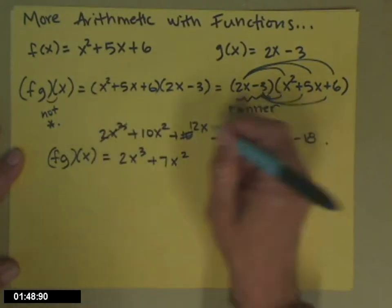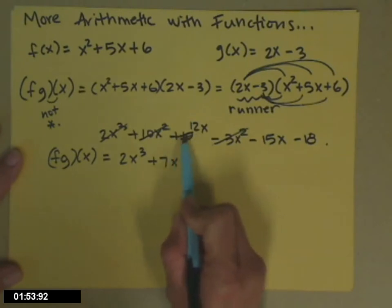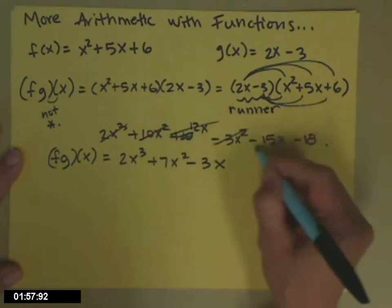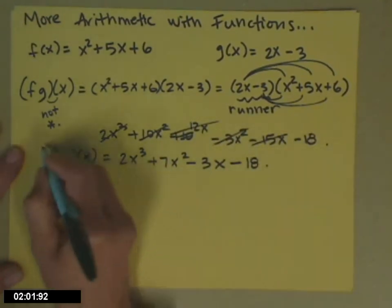Sometimes if you have a lot of terms here, it's convenient to scratch them off as you go so you don't forget anybody. A plus 12x and a minus 15x will be minus 3x, and then a minus 18. And that's the answer.